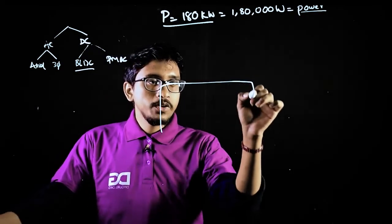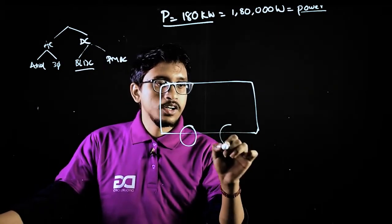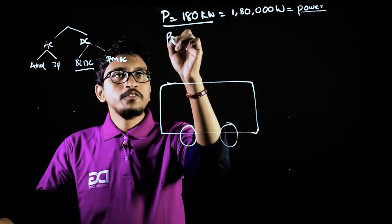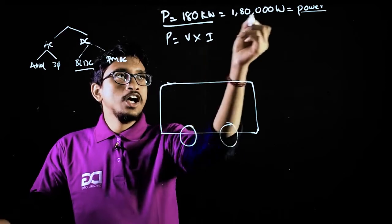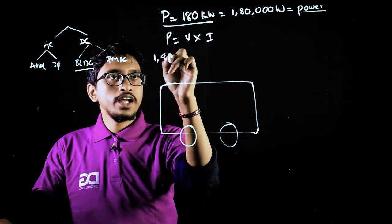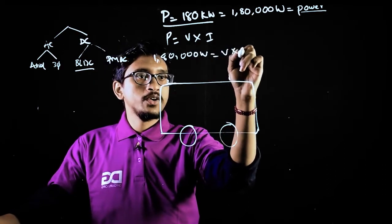See, for this we need to consider our vehicle. Generally, it comes actually from the vehicle. Previously, we just did it like this: Power equals voltage into current, and what is the power here? 1,80,000W. Voltage into current.